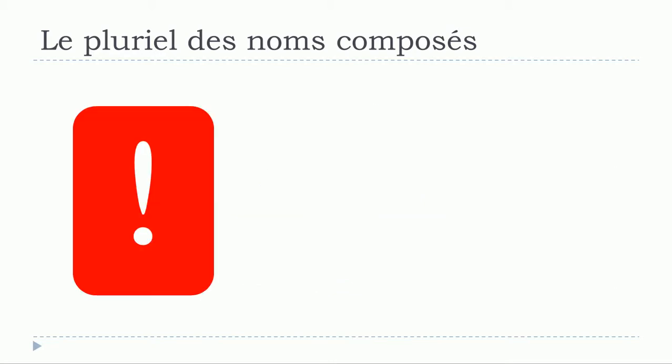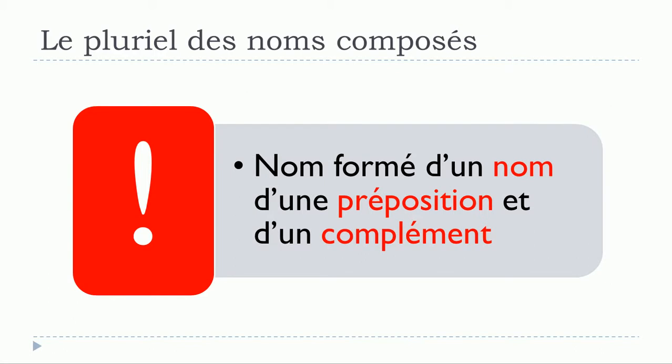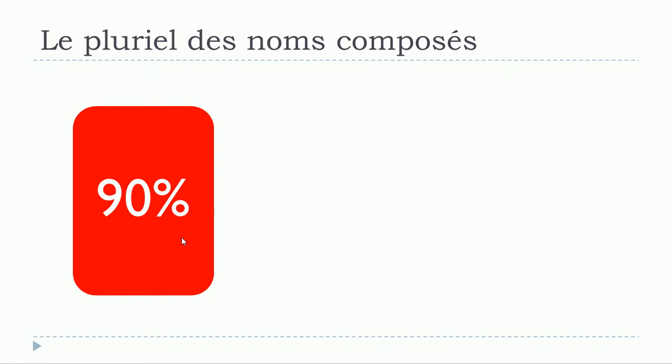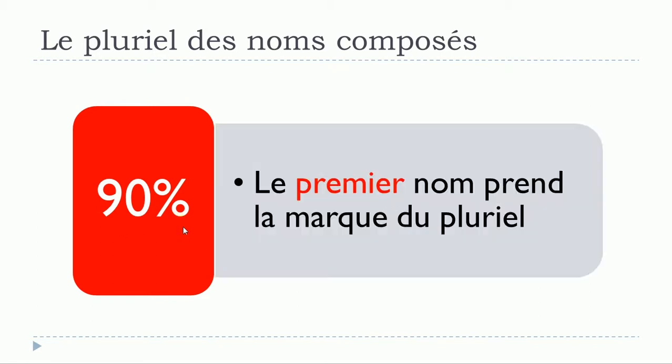We'll start with the first one. The first one will be un nom composé where the first part is un nom, then the second part is une préposition, and the last part is un complément. In that case, well in like 90% of the cases, the rule will be that it's only le premier nom that will take the mark of the plural.